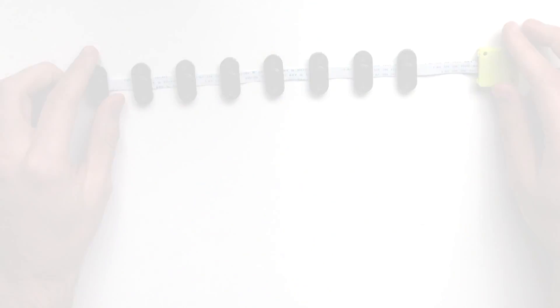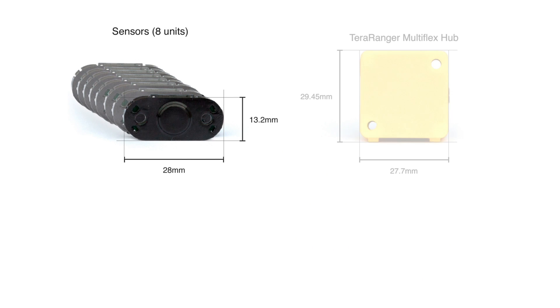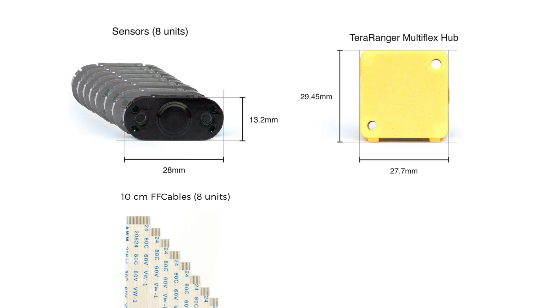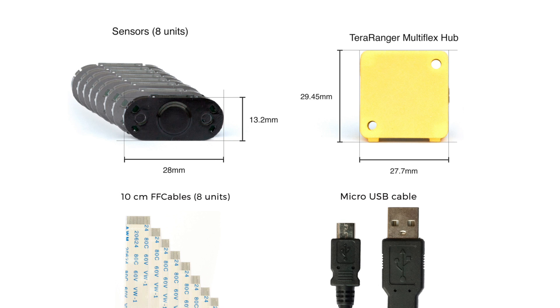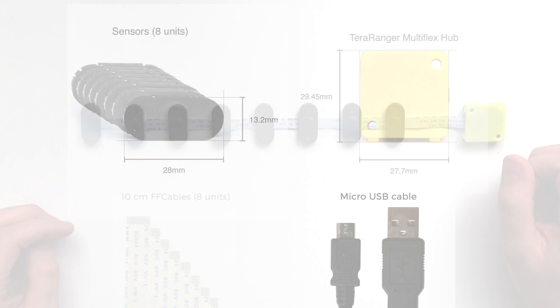You will receive 8 sensor units, a hub, a set of 10cm cables and a micro-USB cable for powering. There is an optional cable pack with different length cables if needed.